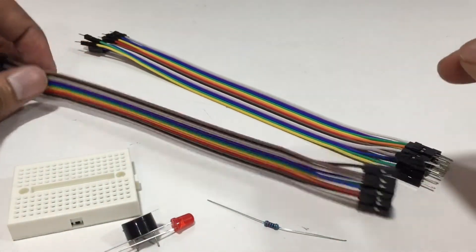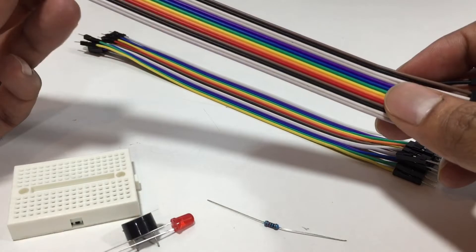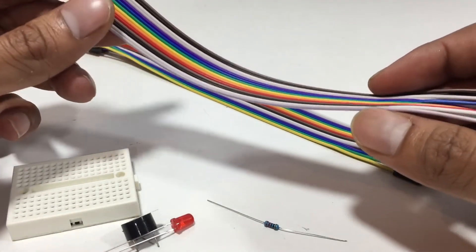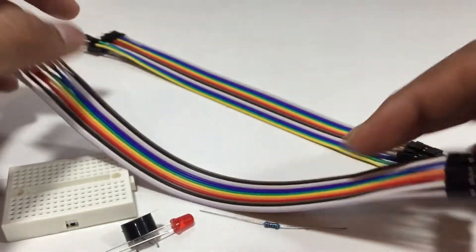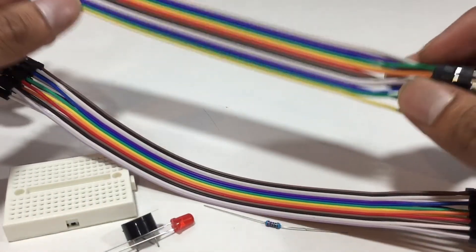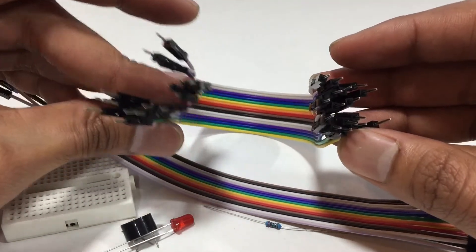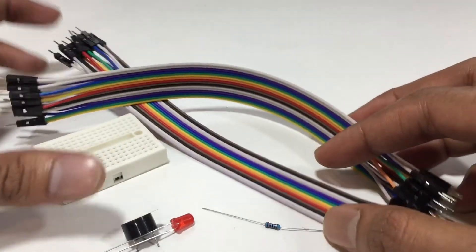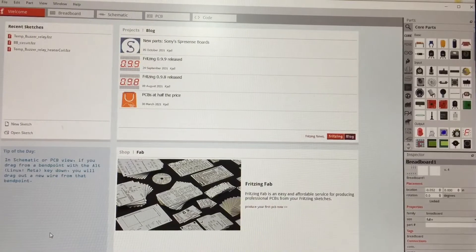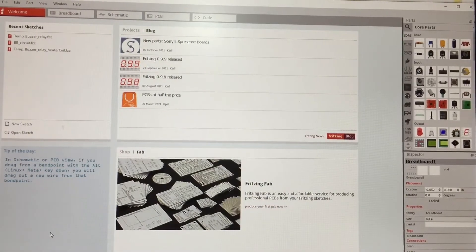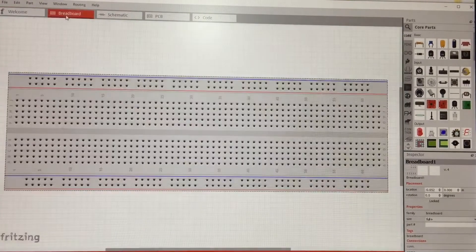Lastly we need some wires. This is male to female, this is male to male. Ok, now let's make a breadboard circuit.